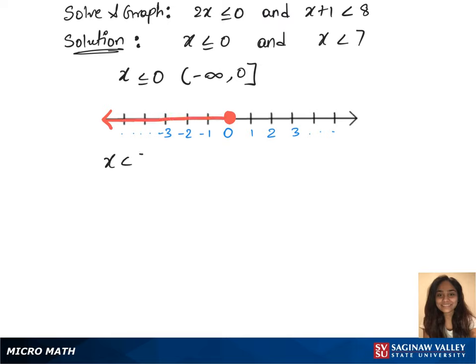We have our second inequality, x less than 7. For that, the interval notation is minus infinity to 7. We have to plot this on the number line, and look for 7 on the graph and mark it. That is extending to minus infinity.